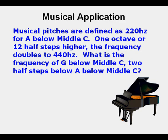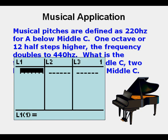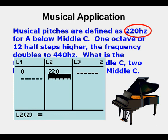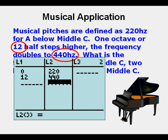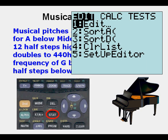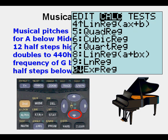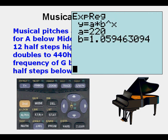Now for our musical application. Musical pitches are defined as 220 hertz for A below middle C. One octave, or 12 half steps higher, the frequency doubles to 440 hertz. We want the frequency of G below middle C, which is 2 half steps below A below middle C. In Stat Edit, we enter point 0 with 220 cycles per second, and point 12 with 440 hertz, then go to Stat Calc 0 and press Enter twice to find the relationship.